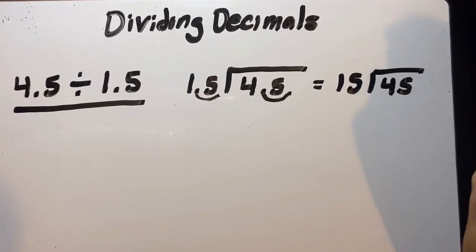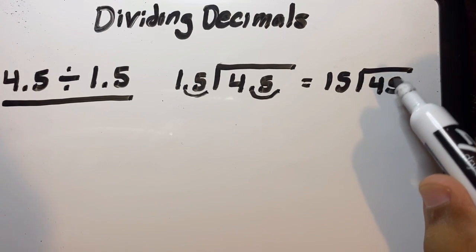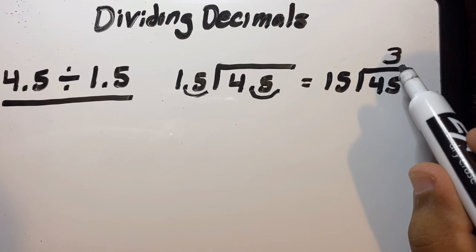We know that 15 can go into 45 three times, and based on that we know that 1.5 can fit into 4.5 three times.